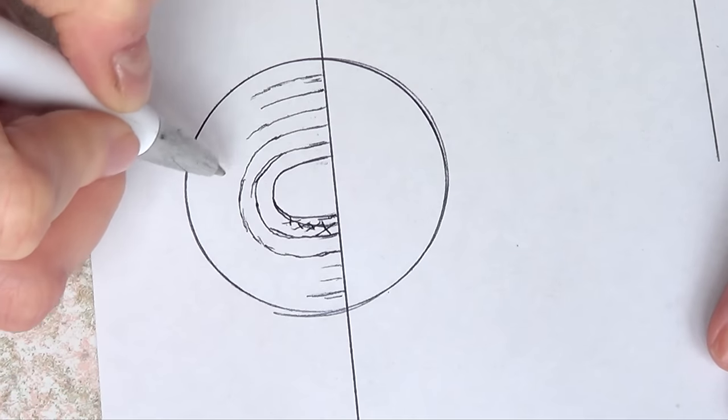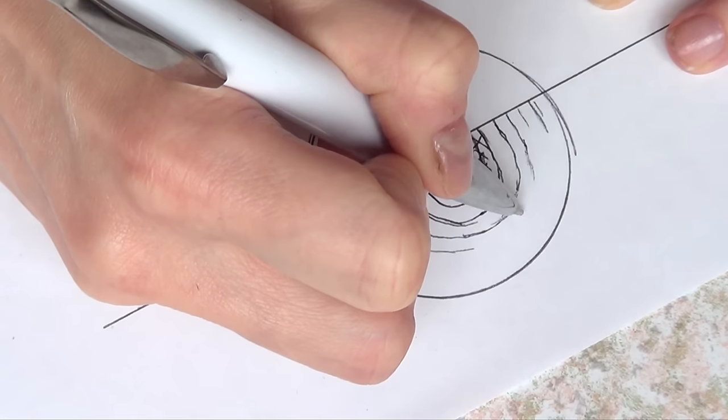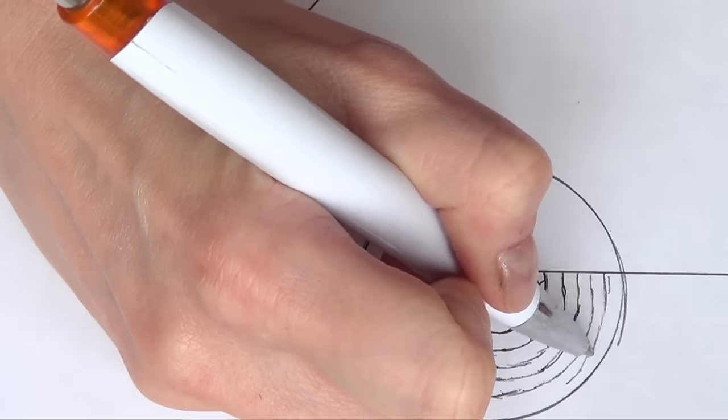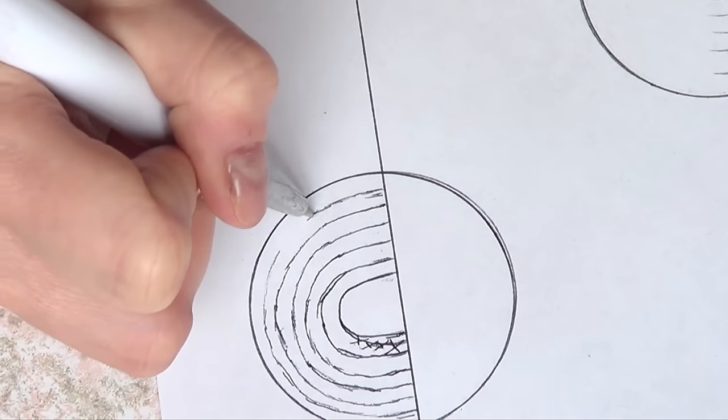I went back and forth and made a few mistakes because it's hard to just get the lines straight, but as long as there are six and they just look like a rainbow.